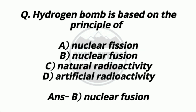Question 23. Hydrogen bomb is based on the principle of? Option A: Nuclear fusion. Option B: Nuclear fusion. Option C: Natural radioactivity. Option D: Artificial radioactivity. Answer: Option B — Nuclear fusion.